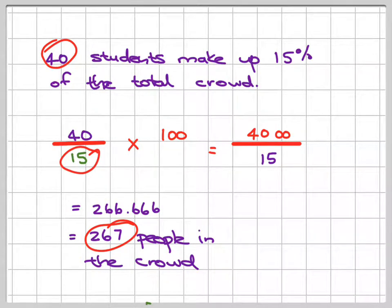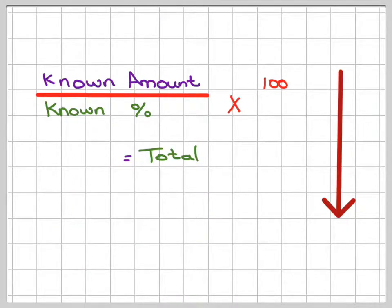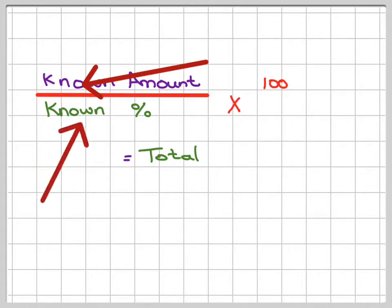Okay, so I hope that makes it a bit clearer. You might need to practice a few more of these. This does come with practice. If you can just remember your formula over here, known amount over here divided by known percent times 100 is going to give you your total.